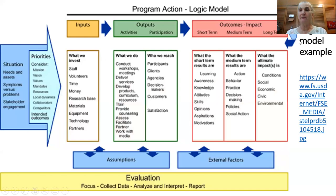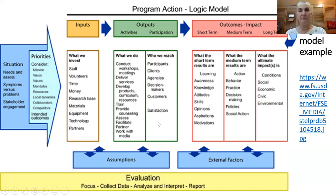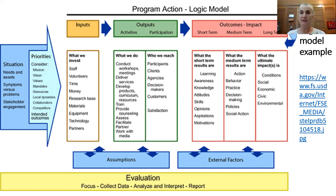Here is another logic model from the US Forest Service. The inputs could be staff and volunteer time for an education program, and materials for the trainings. The activities could be workshops to train people. Outputs could include participation of various groups — how many people participated in the workshops. A short-term outcome might be increased learning and awareness of a given issue. That increased knowledge could result in changes in behavior or how people carry out certain practices, such as tree planting. The long-term impact might be an environmental effect, perhaps on tree cover.